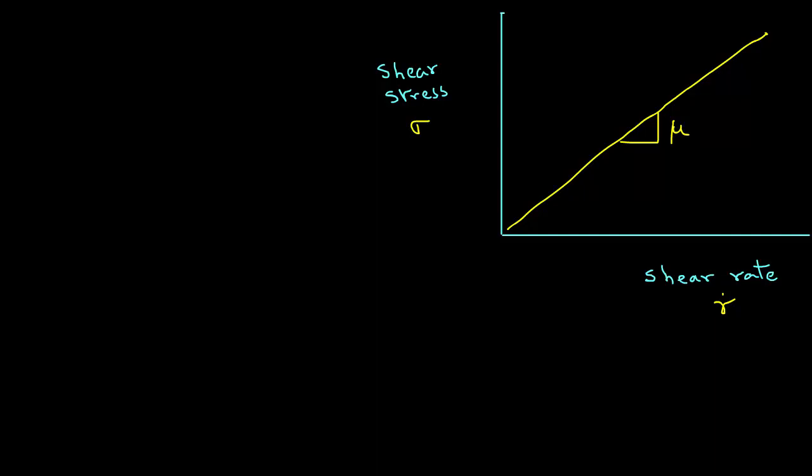Let's look at a type of fluid called Bingham fluids. We have this diagram already plotted for a Newtonian fluid, where the relationship between shear stress and shear rate is a straight line with a slope of mu, which is viscosity.